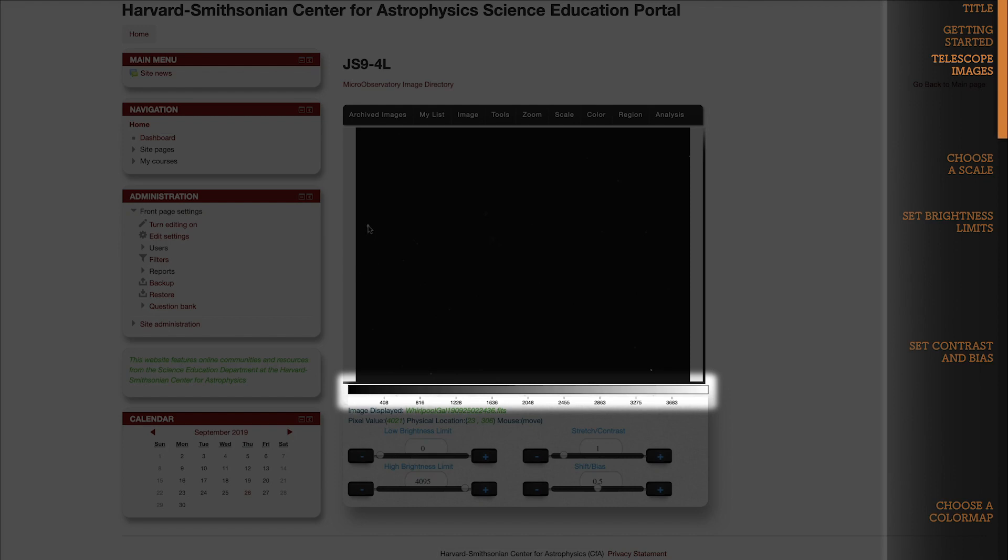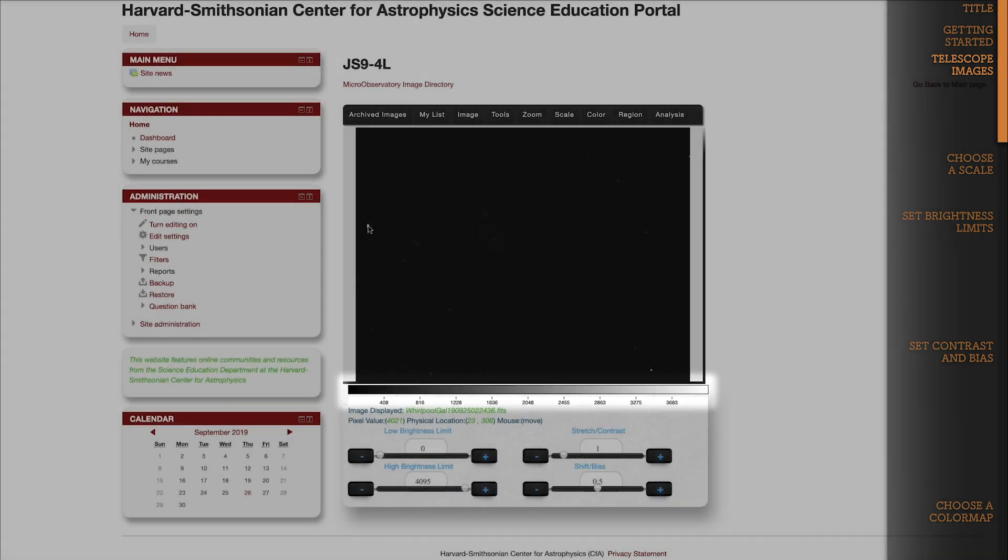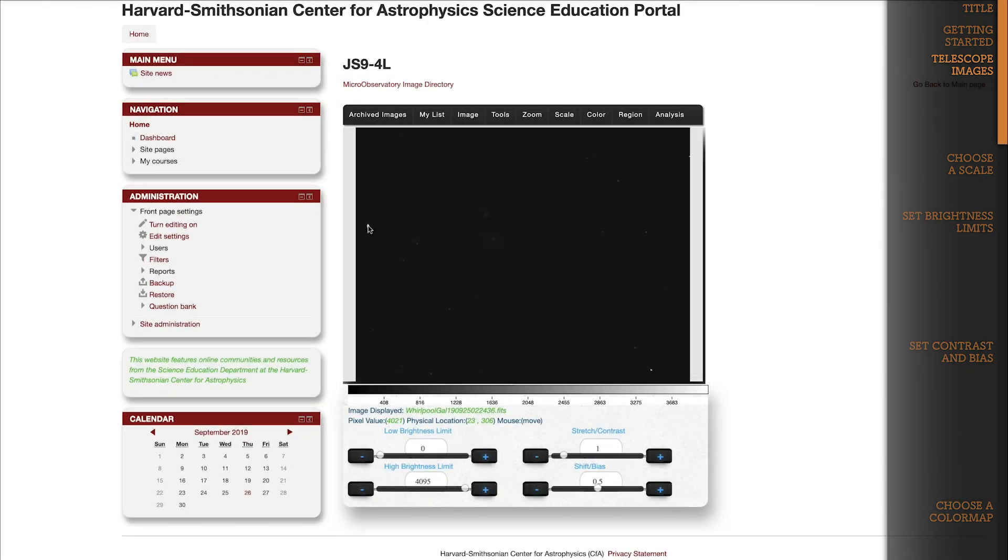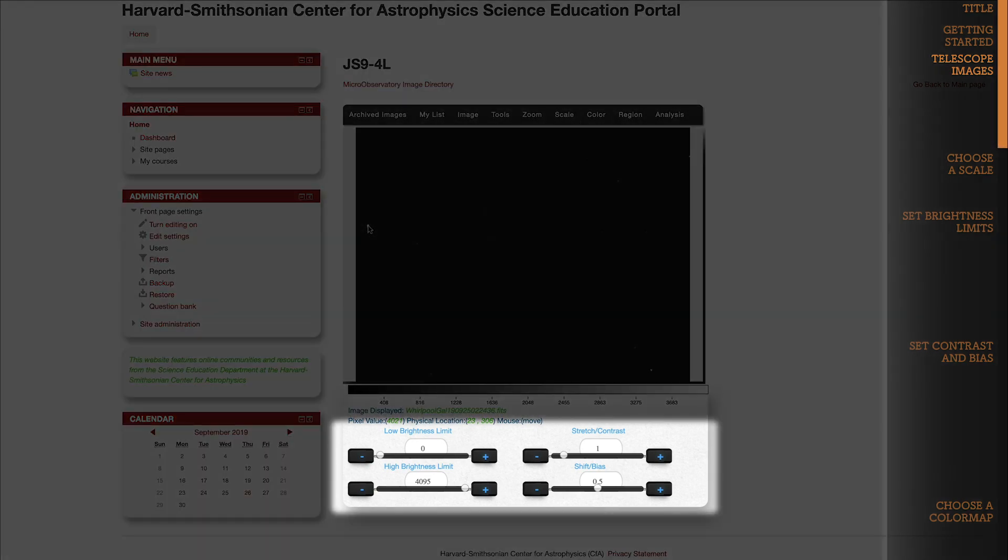Higher pixel values in our range are assigned lighter shades of gray, and the highest value in the range is set to absolute white. Anything above the highest value in the range is called fully saturated and gets set to absolute white as well. You can change the way these shades of black, gray, and white get assigned to different pixel values using the controls down here, which I'll explain in a minute.